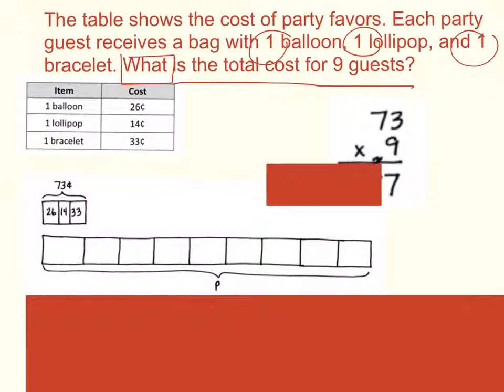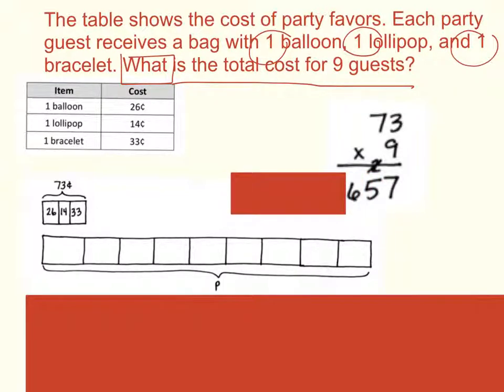Next we multiply our tens column. So nine times seven tens would give me 63 tens. And remember, I had two left over from my first problem. So that would be 63 plus two, which would give me a total of 65 tens.